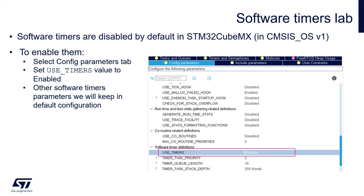In general, to enable software timers please go to FreeRTOS configuration, select CMSIS-OS version 2, and then below within the config parameters be sure that the 'use timers' option is enabled.